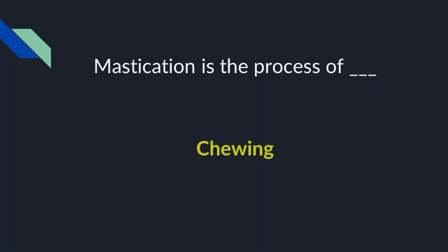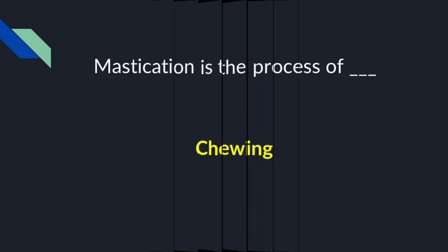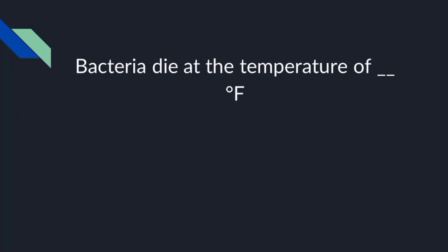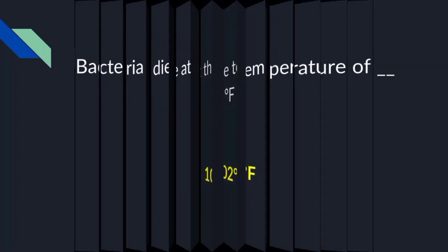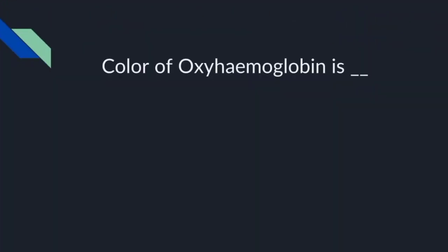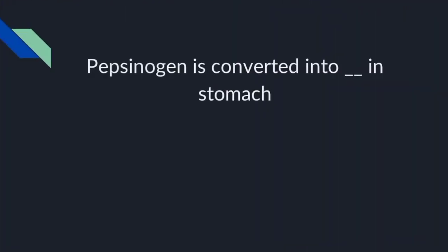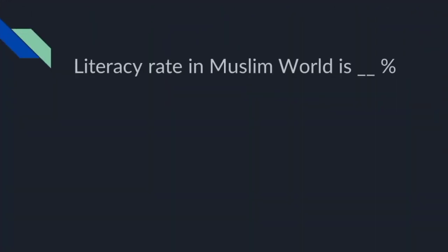Mastication is the process of chewing. Bacteria die at a temperature of 102 degrees Fahrenheit. The color of oxyhemoglobin is bright red. Pepsinogen is converted into pepsin in the stomach. The literacy rate in the Muslim world is 40%.